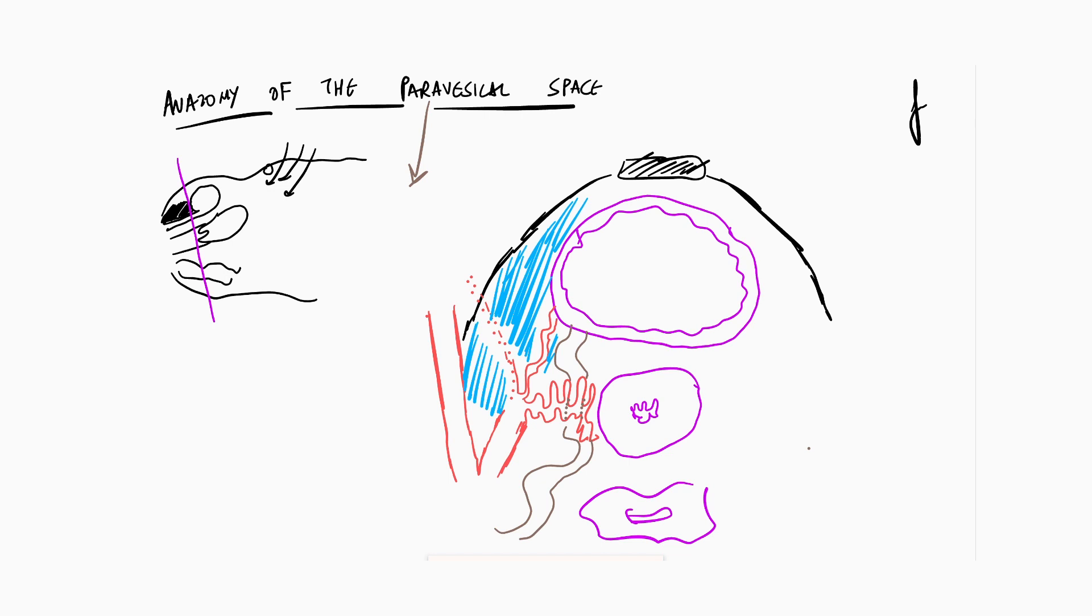When we try to understand the paravesical space, it is very simple. One of the borders is going to be formed by the bladder, one by the cervix, one by the ureter. On one side you have the bone. Besides the bone, obviously God has gifted muscles, so the muscle which is present here is the obturator internus muscle.